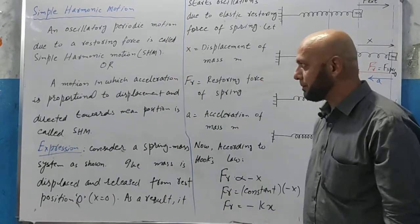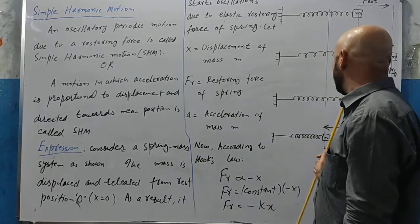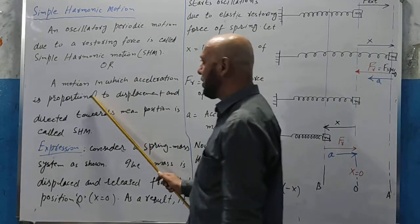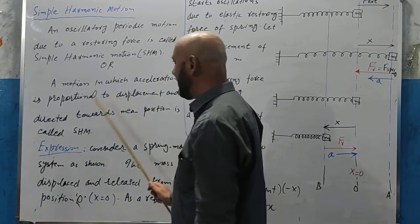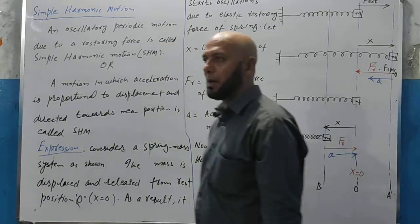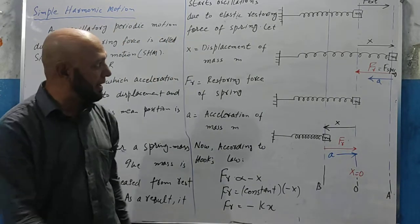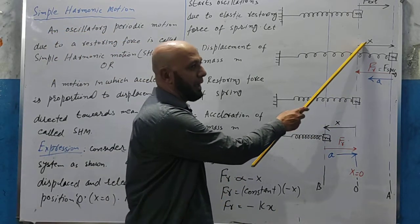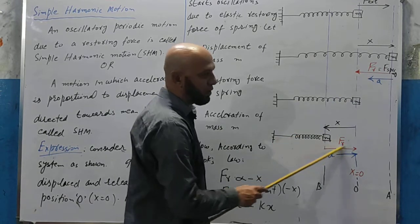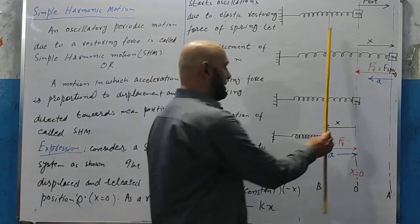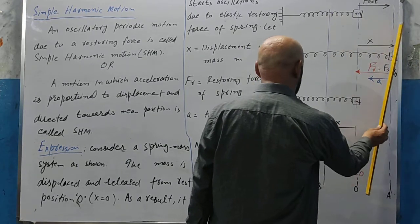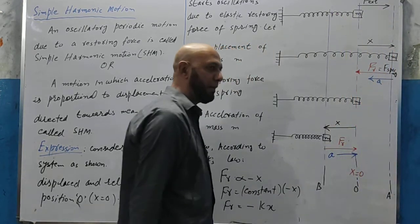The other definition is based on acceleration: acceleration is proportional to displacement and directed towards the mean position — this is called simple harmonic motion. Acceleration proportional to displacement defines SHM.